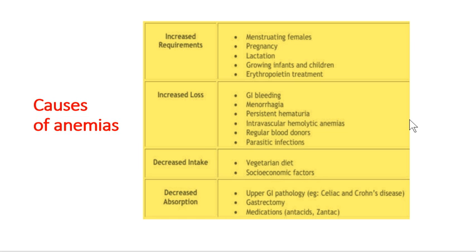Causes of anemia can be explained in four categories. First is increased requirement: menstruating females have more iron needs; pregnancy is most important as all growth factors and nutrition are needed for fetal growth; during lactation the need is more; in growing children the need is more; and erythropoietin treatment stimulates erythropoiesis in bone marrow, increasing nutrient requirements for RBC synthesis. When supply is insufficient relative to increased requirement, anemia results.